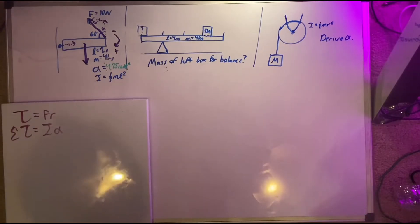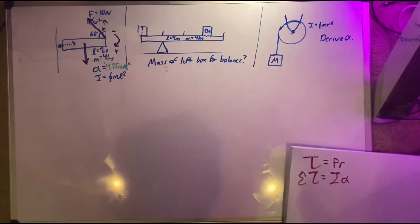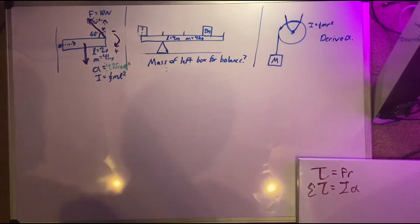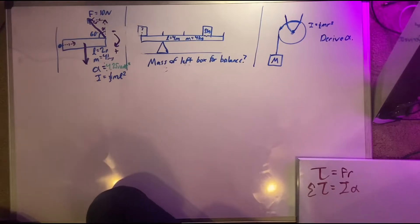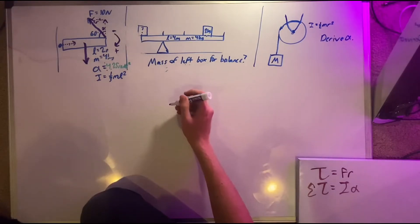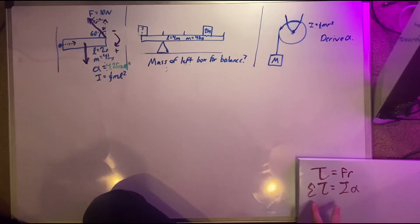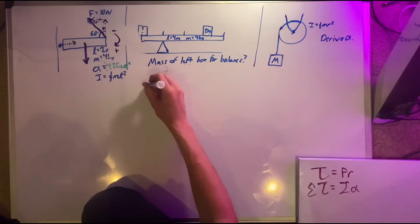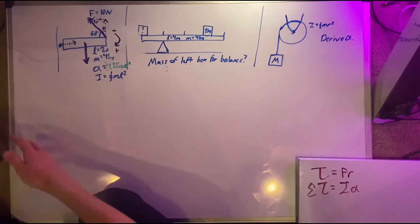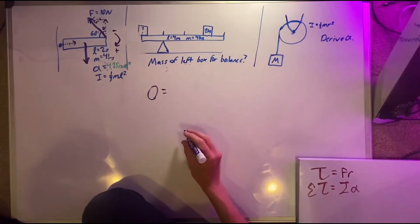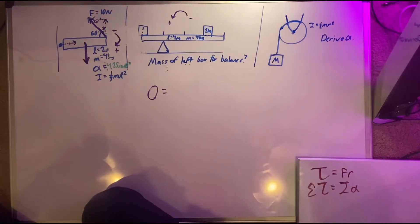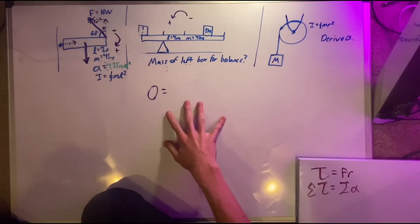Now we have this balance scale. We have one block over here and one block over here. The entire length is 4 meters, the mass of the balance is 4 kilograms, and we're looking for the mass of the left box in order for this balance to balance. Using sum of torques again — since we want it balanced, we want zero angular acceleration, so sum of torques equals zero. Let's set counterclockwise as positive and clockwise as negative.